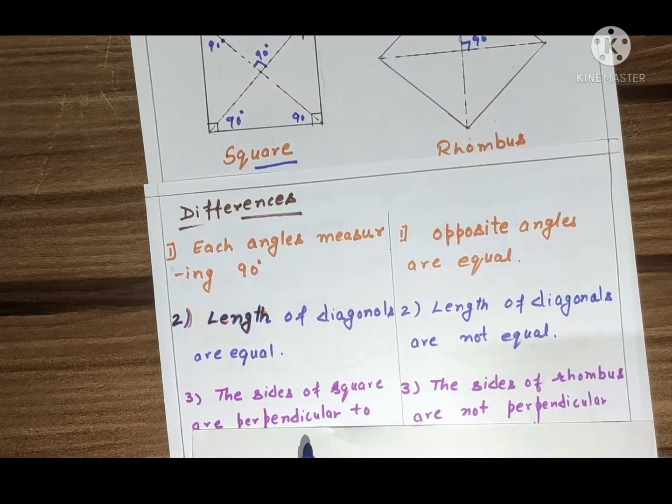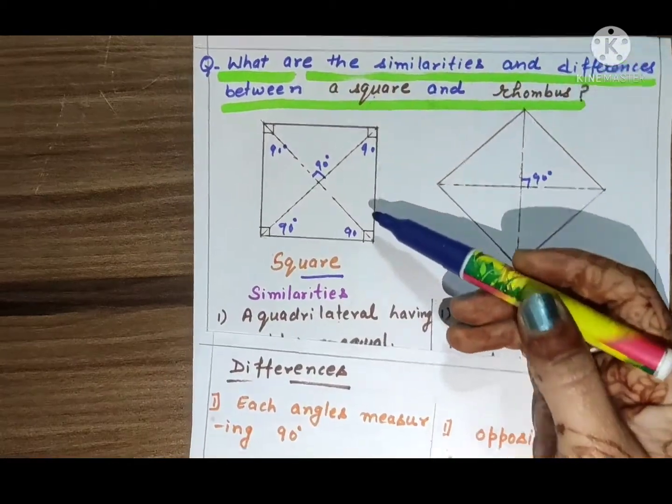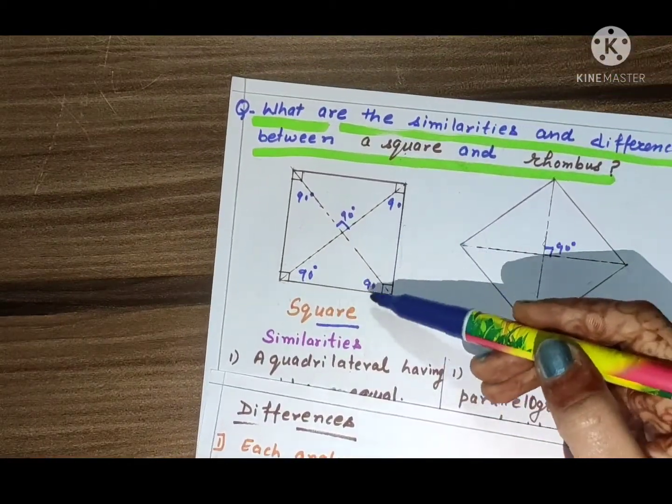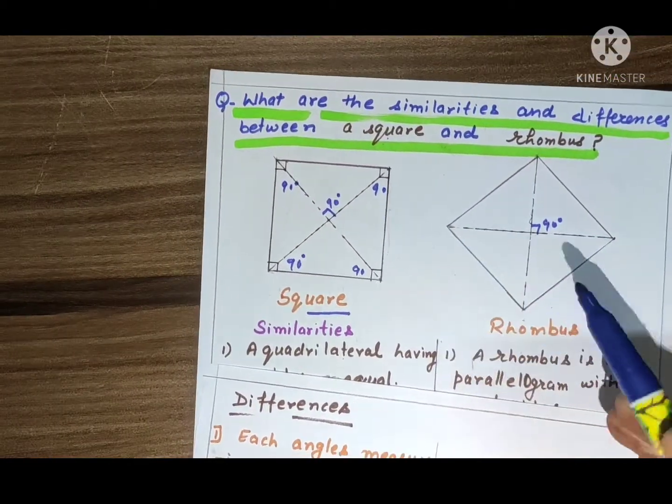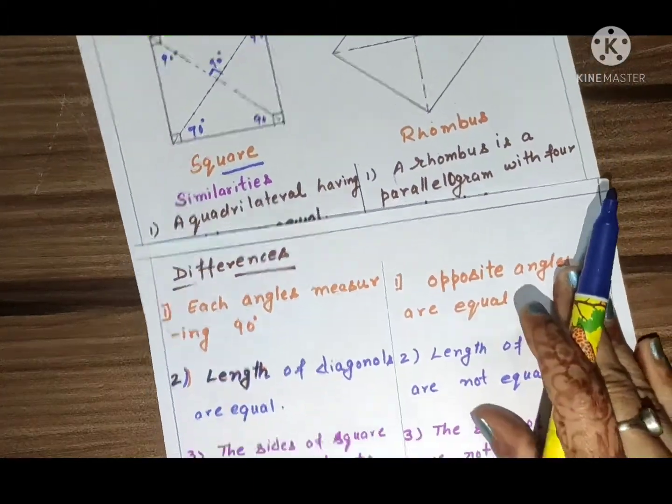Third point: sides of square are perpendicular to one another. The sides make 90-degree angles. In rhombus, the sides are not perpendicular to one another.